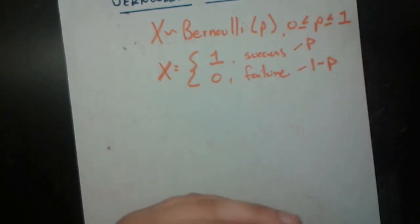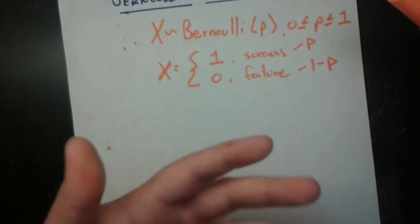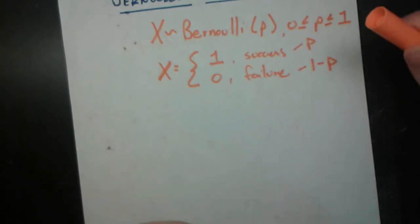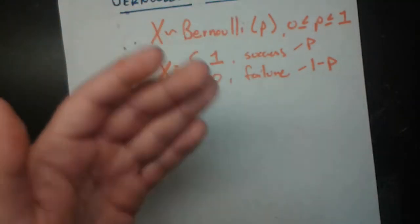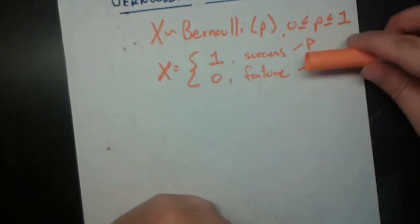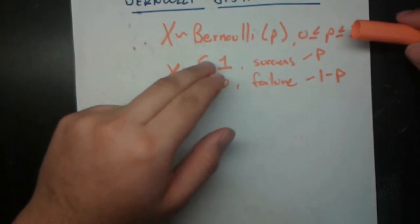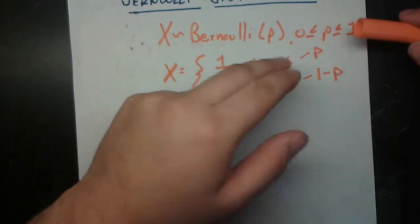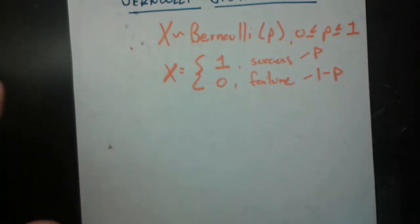Success and failure can take many different forms in the real world. For example, the most basic example is probably a coin flip. If we call success heads and failure tails, then p would be 1/2, therefore 1 minus p would also be 1/2. So x equals 1 if we have heads, and x equals 0 if we have tails.